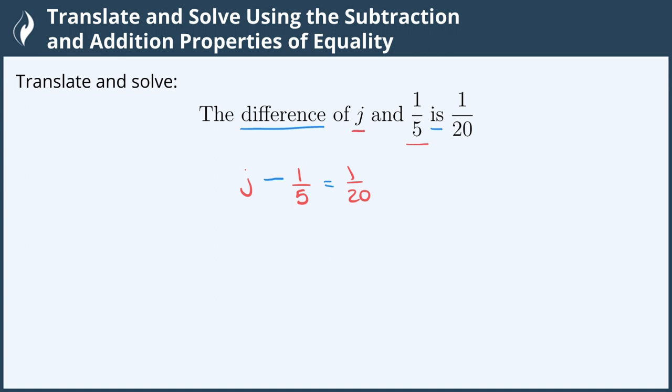Now we need to solve this equation and to do such we need to find all of the operations around the variable and do the opposite to negate them. So we have a subtraction sign here and the opposite of subtraction is addition. So we will add one-fifth to both sides to keep the equal sign balanced.